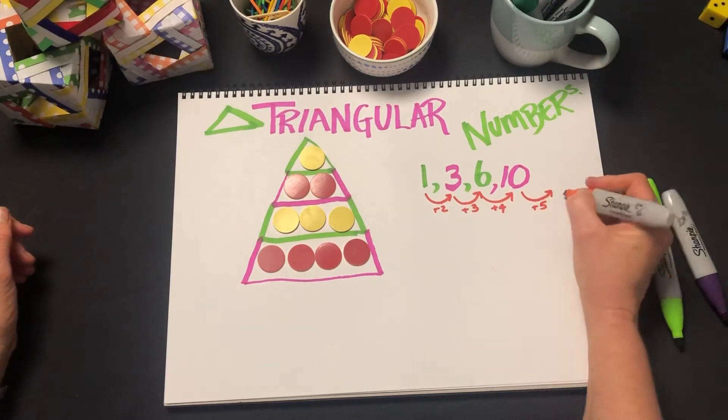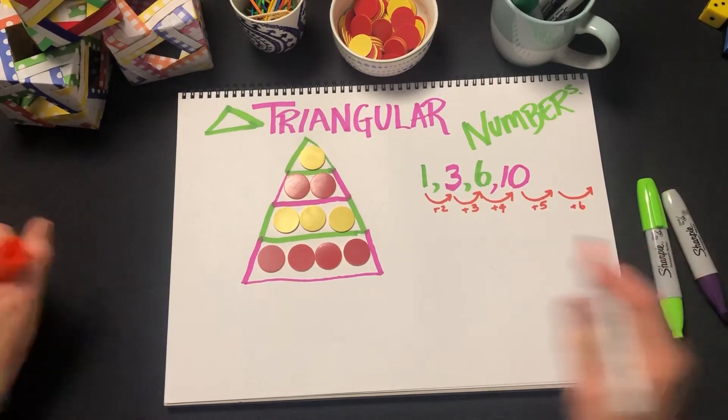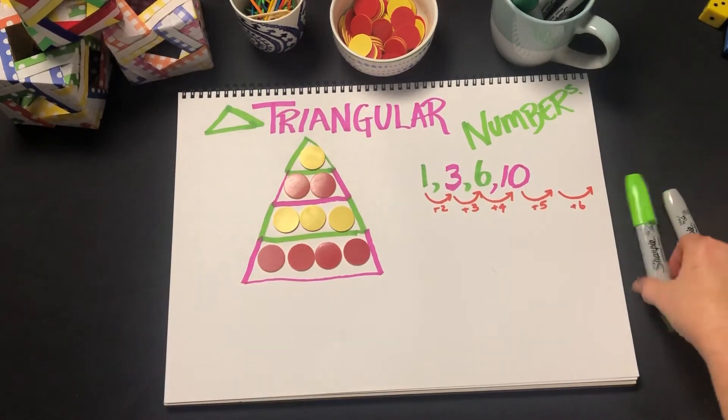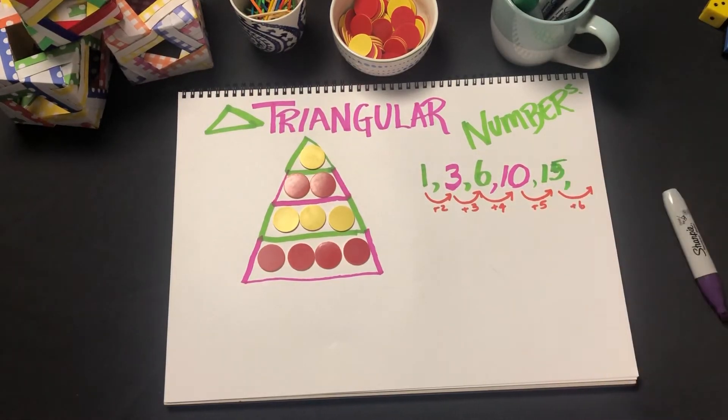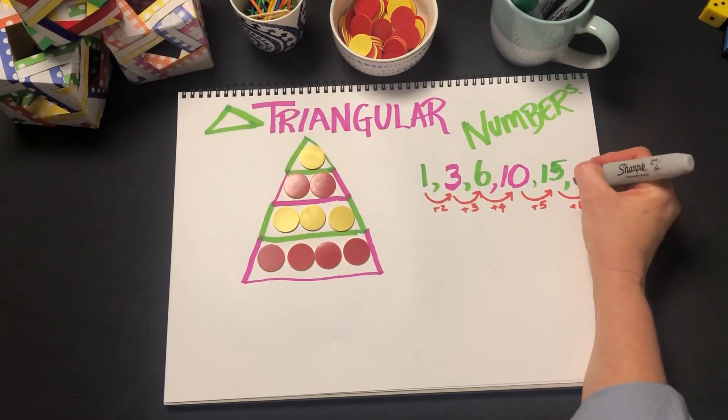And so you can get students to predict what the next triangular number would be: adding five, adding six, and so on. Hopefully they're going to come up with 15 and 21 as part of their pattern.